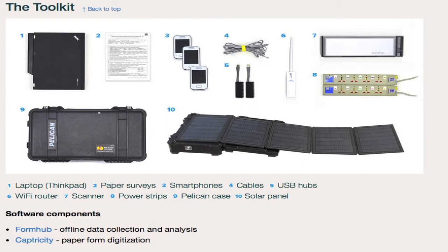In addition to the hardware that you see above, the HDT contains a standardized survey and methodology for an information needs assessment, in addition to several software components, including ODK Collect for mobile phone data collection, FormHub, and Captricity. We've also created a range of training guides that enable you to learn very quickly and rapidly how to use all aspects of the toolkit. And we are making these materials available under a Creative Commons license so that anyone can continue to improve and iterate upon these processes as they use the system.